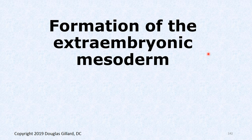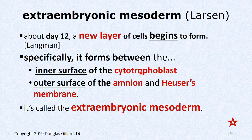Now for formation of the extra embryonic mesoderm — this is important and will stay with us for a while. Around day 12, a new layer of cells forms between the outer cytotrophoblast and the inner Heuser's membrane or amnion. This new layer is called the extra embryonic mesoderm. Note: there will also be an intra embryonic mesoderm later — this is not that.